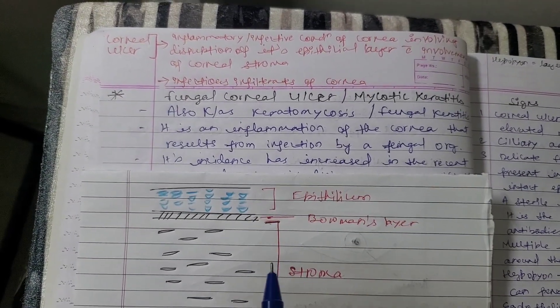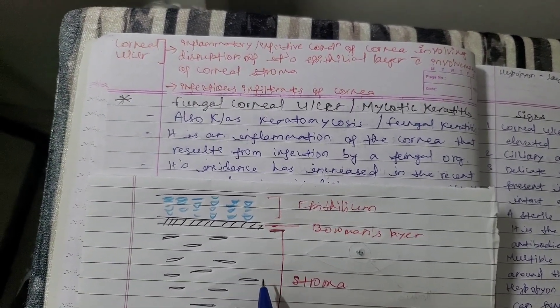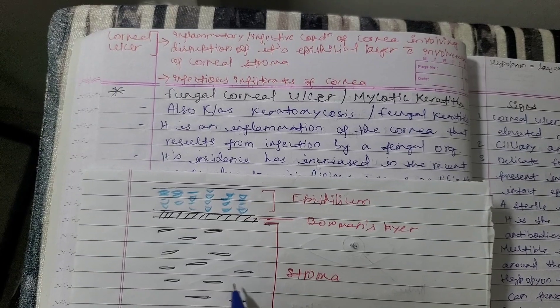What is a corneal ulcer? It is a stromal infiltration — an infection that has reached the stroma.